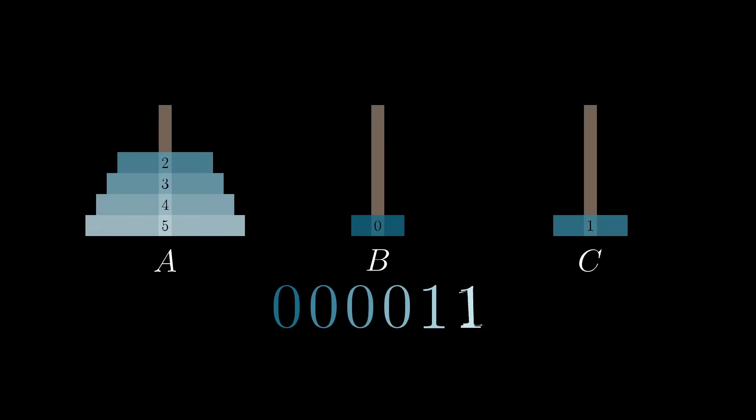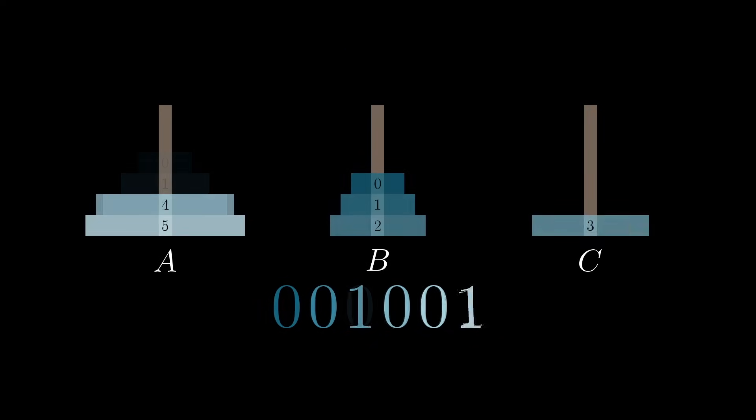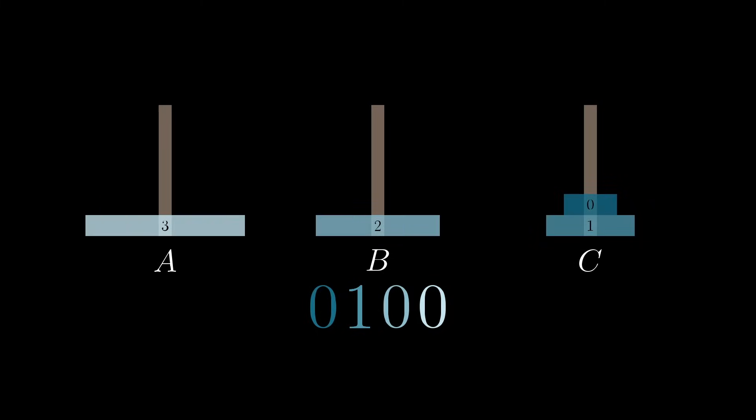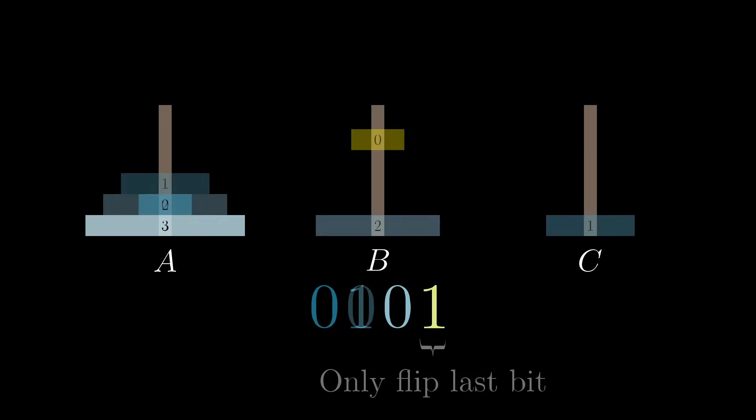Alright, so with that mini introduction, the surprising fact that Keith showed me is that we can use this rhythm to solve the towers of Hanoi. You start by counting from 0. Whenever you're only flipping that last bit, from a 0 to a 1, move disk 0 one peg to the right. If it was already on the rightmost peg, you just loop it back to the first peg.